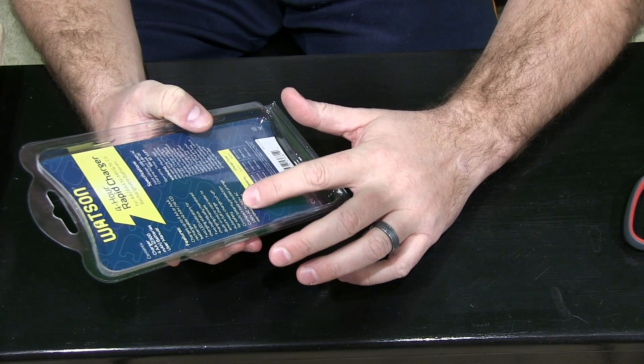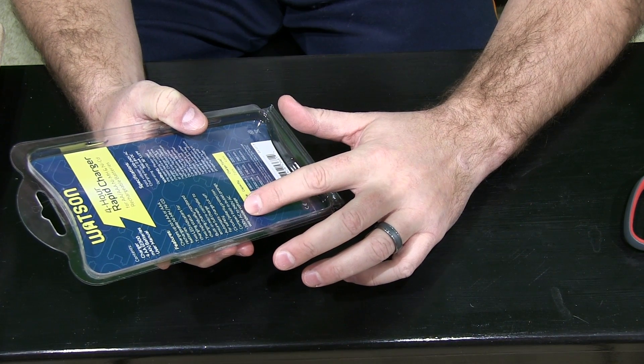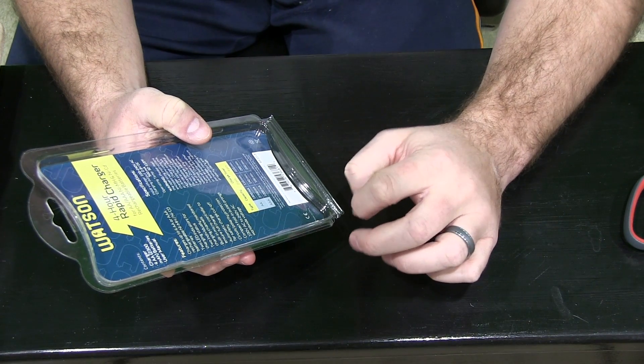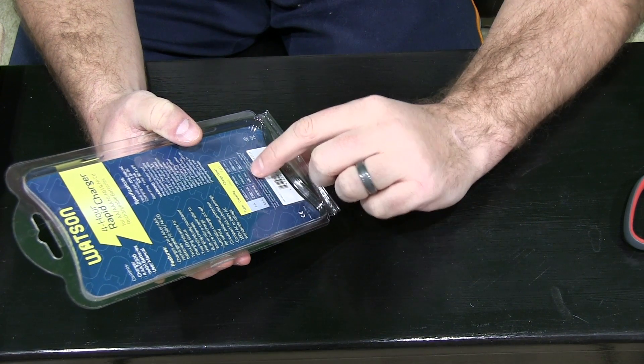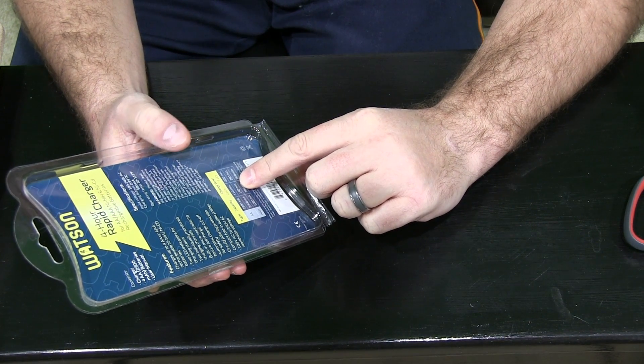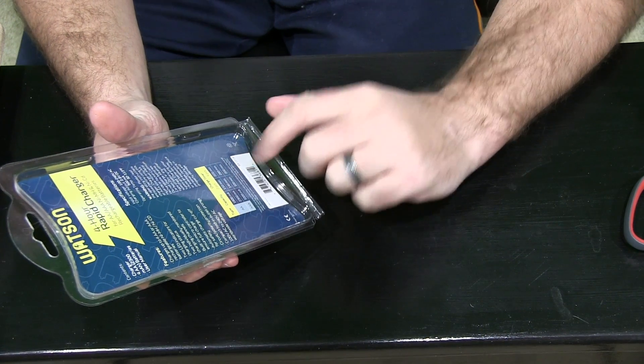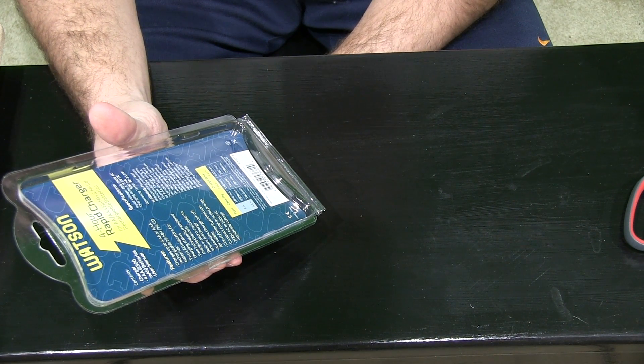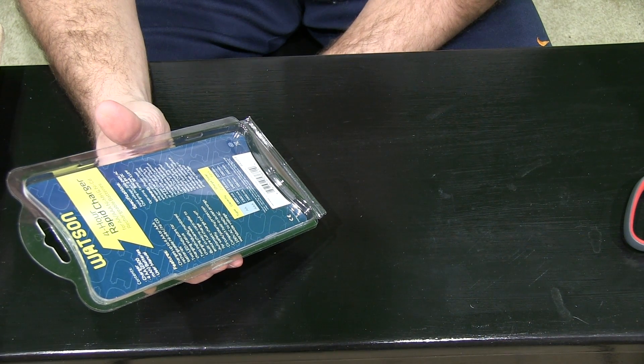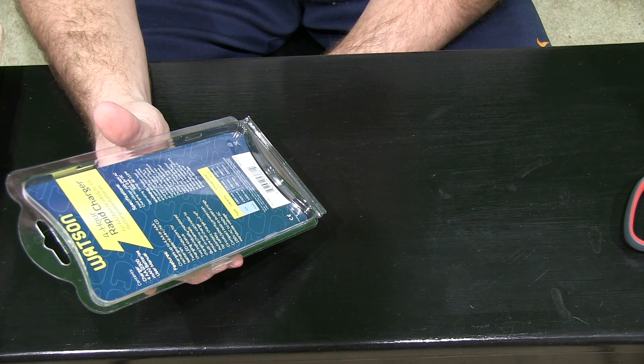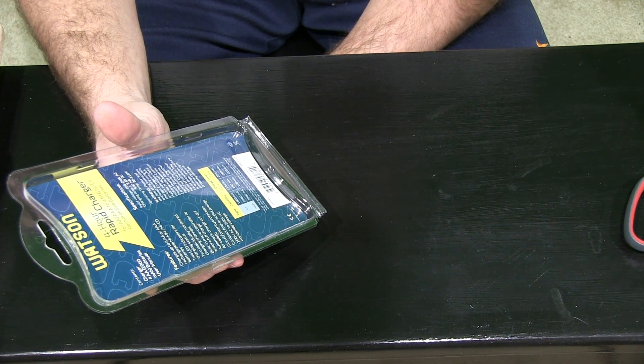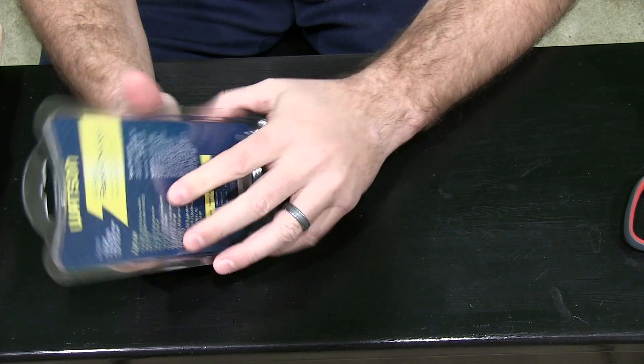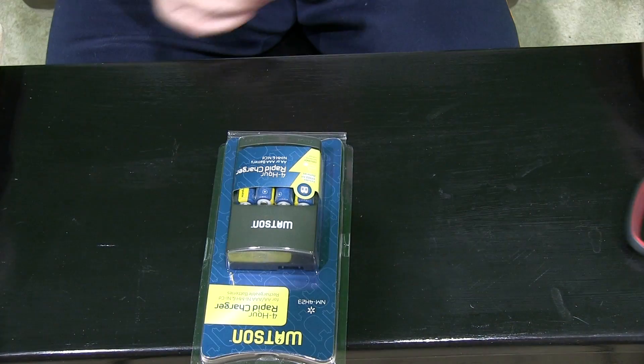Compact fold-in outlet prongs, 100 volt or 240 volt AC worldwide voltage. For charge time it says two AA batteries about 110 minutes, four AA batteries about 220, two AAA batteries about 100 minutes, four AAA batteries about 200 minutes. That's pretty impressive when you think about it.